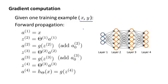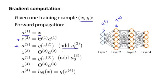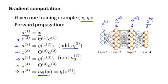The first thing we do is we apply forward propagation in order to compute what our hypothesis actually outputs given this input x. Recall that a1 is the activation values of the first layer, that is the input layer, so we're going to set that to x. Then we're going to compute z2 equals theta1 times a1, and a2 equals g, the sigmoid activation function applied to z2. This gives us our activations for the first hidden layer, that is for layer two of the network, and we also add those bias terms. Next, we apply two more steps of forward propagation to compute a3 and a4, which is also the output of our hypothesis h of x. This is our vectorized implementation of forward propagation, and it allows us to compute the activation values for all of the neurons in our neural network.